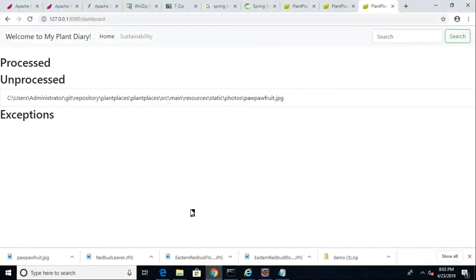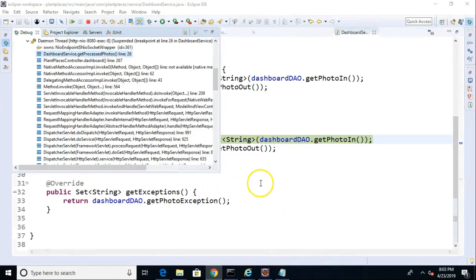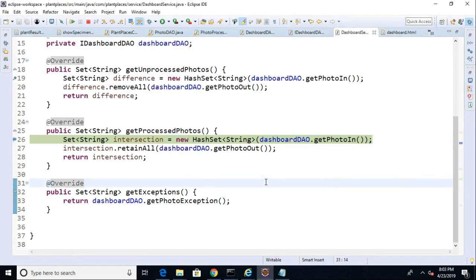Note the current state of our dashboard shows this photo in unprocessed because the last time I refreshed, the photo was only in the in topic, not in the out topic. Therefore, it was only in the difference. It was not in the intersection. I bet you we're going to see something else now when I choose refresh here. I choose refresh, and the dashboard goes back, and it's going to consult our two different sets, the in set and the out set.